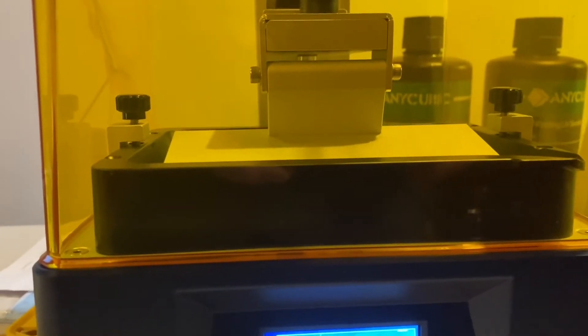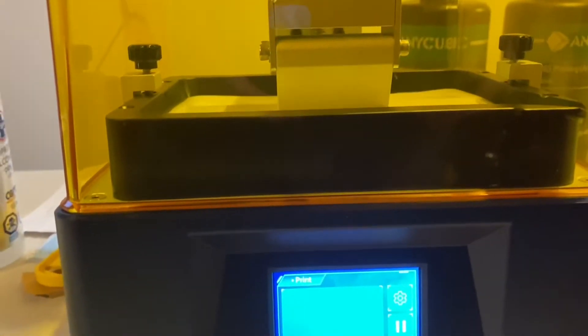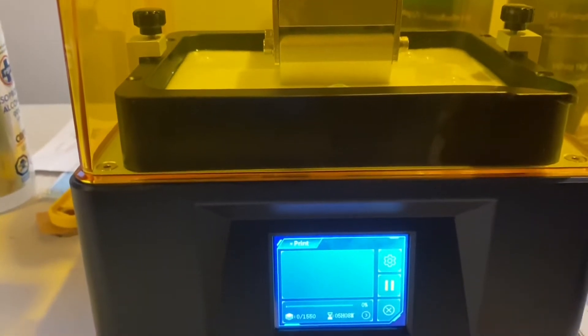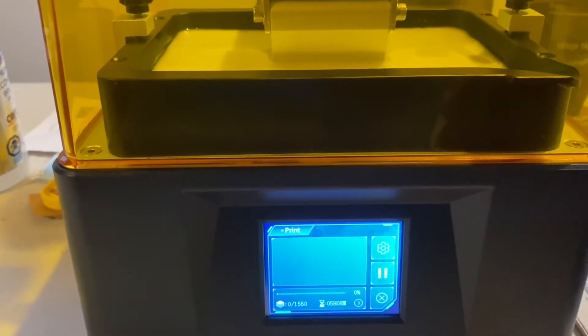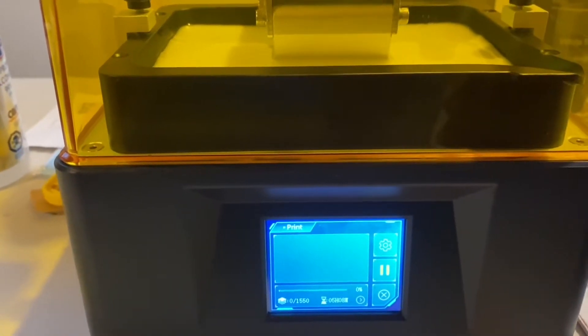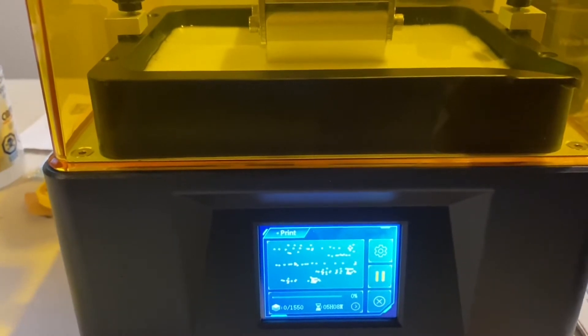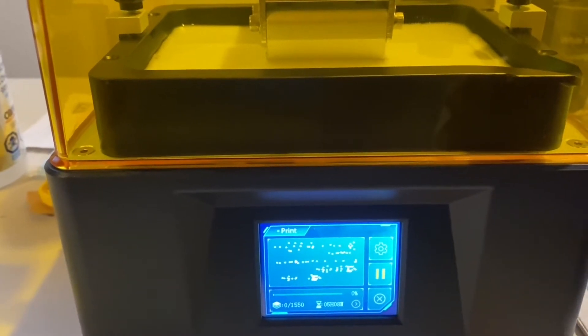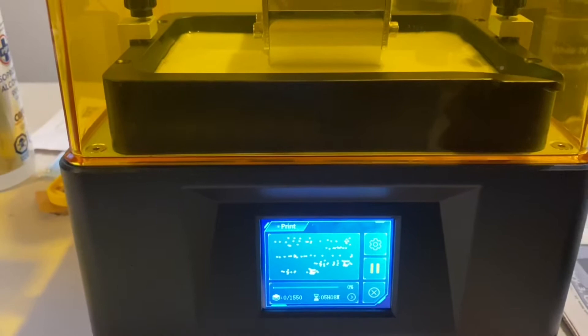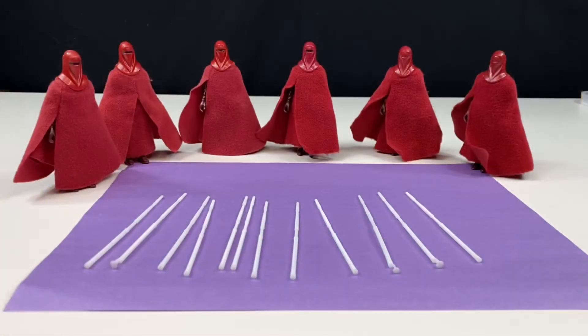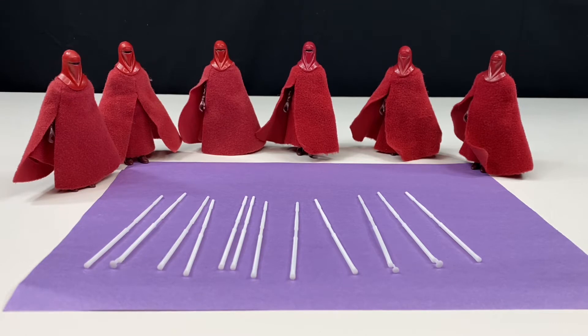Hi, welcome to this episode of Toys Back Zen. Today I'm going to do a little bit more 3D printing. I've done one video on 3D printing already, and here's a second one. I've been 3D printing all summer long. We're going to be printing out a whole bunch of Electro Staffs for the vintage Kenner 1983 Royal Guards.